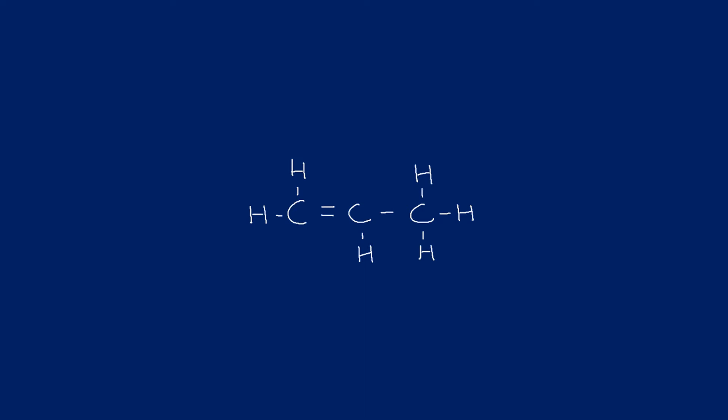Starting with a straightforward example: what we need to do is identify the longest carbon chain. The longest carbon chain must include the functional group — we'll see a couple of examples where that can cause issues, but this one's fairly straightforward. The longest carbon chain is three carbons, so our stem is 'prop'. We know it's an alkene, so it's propene. There are no side groups, so there's no prefix needed.